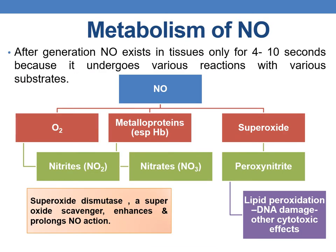After generation, nitric oxide exists in tissues for only 4 to 10 seconds because it undergoes various reactions. With oxygen it forms nitrites (NO2); with metalloproteins especially hemoglobin it forms nitrates (NO3); and with superoxides it forms peroxynitrite, a very reactive free radical oxygen species. Increased peroxynitrite levels lead to lipid peroxidation, DNA damage, and cytotoxic effects. Superoxide dismutase, a superoxide scavenger, enhances NO action by preventing peroxynitrite formation.